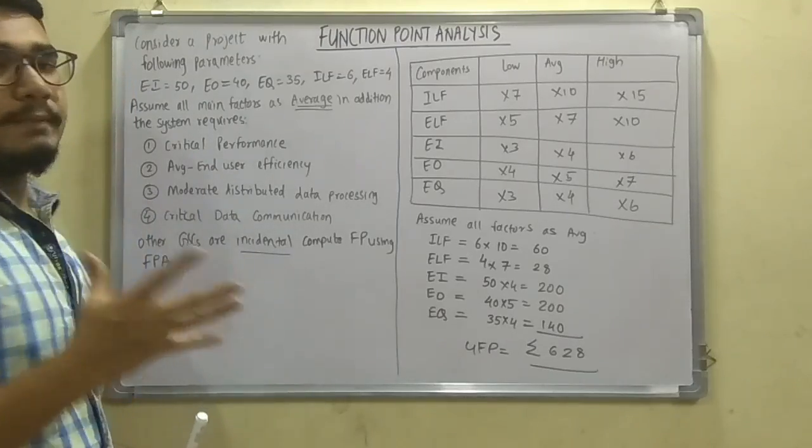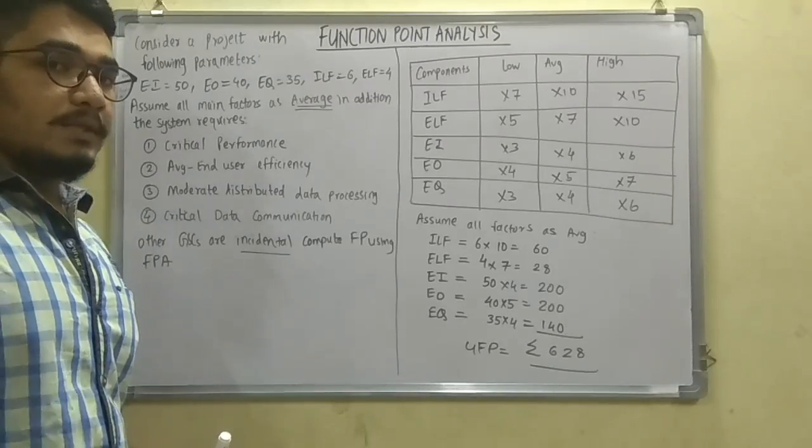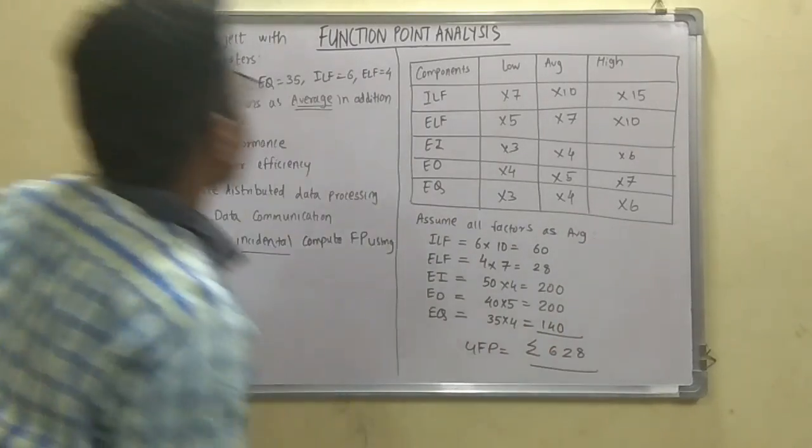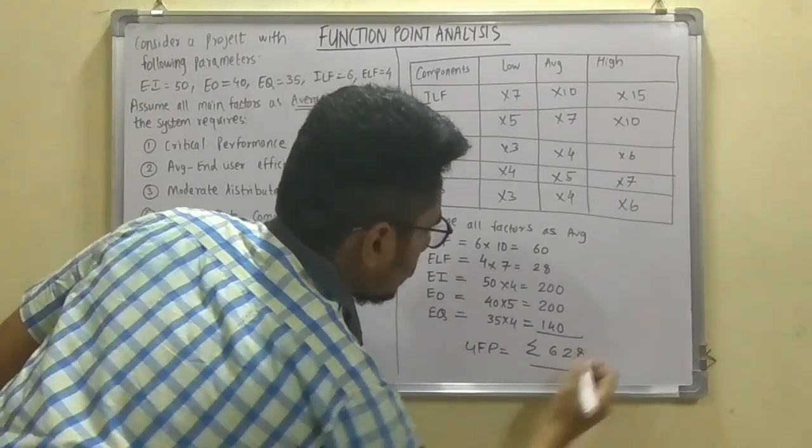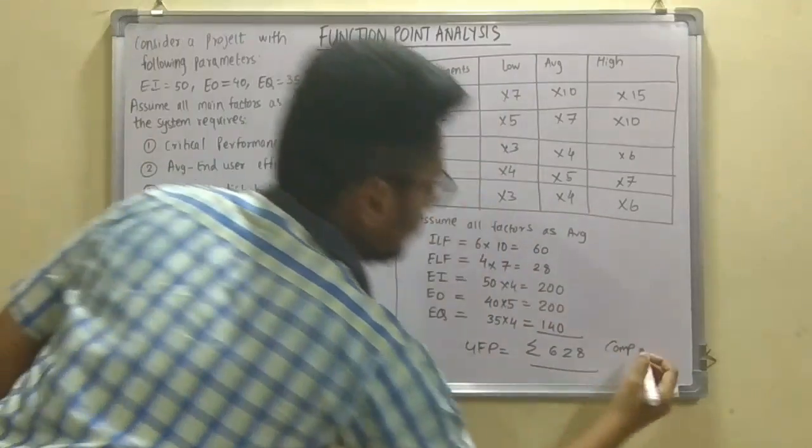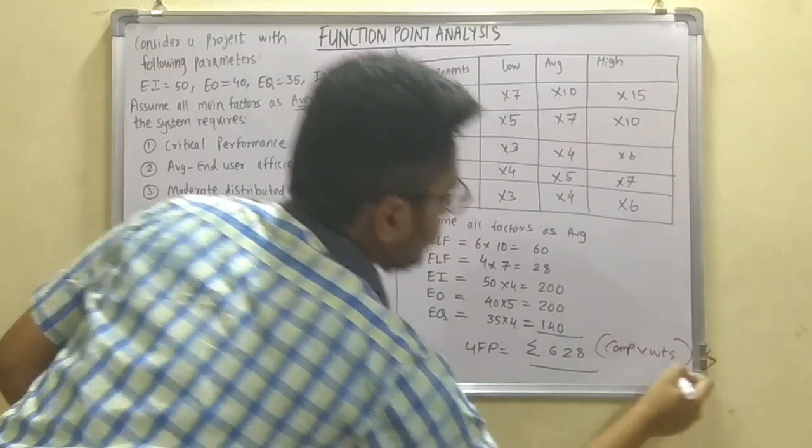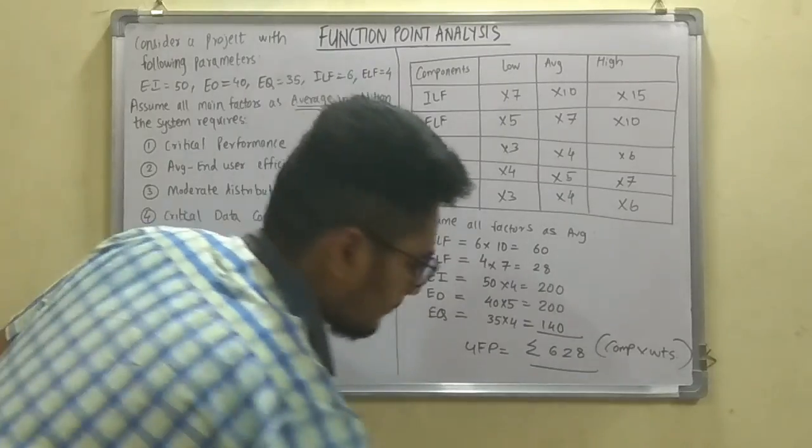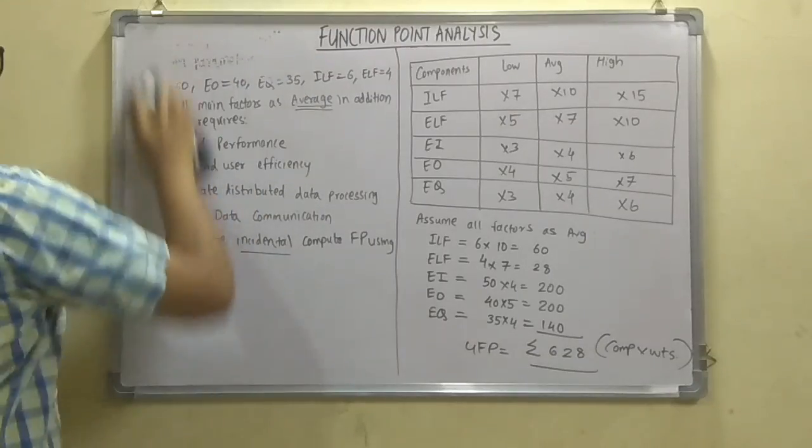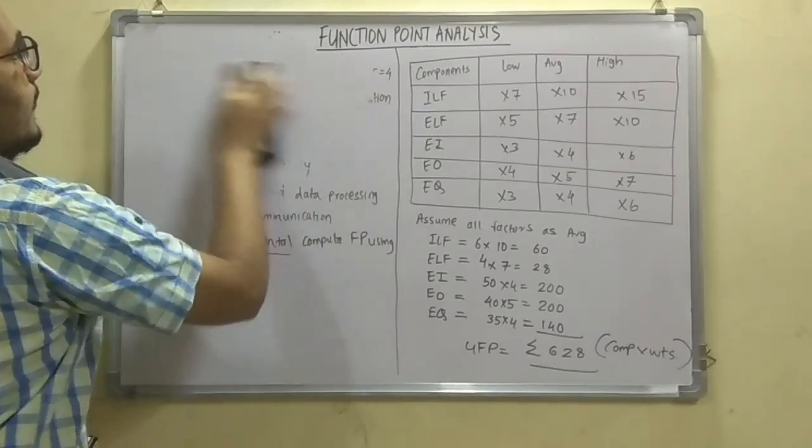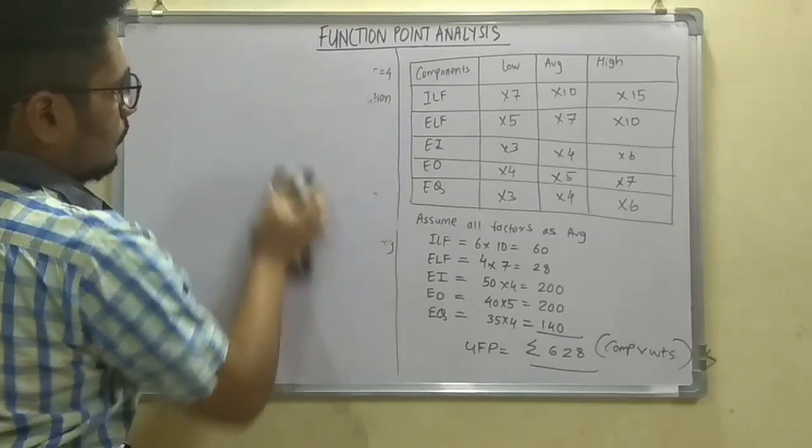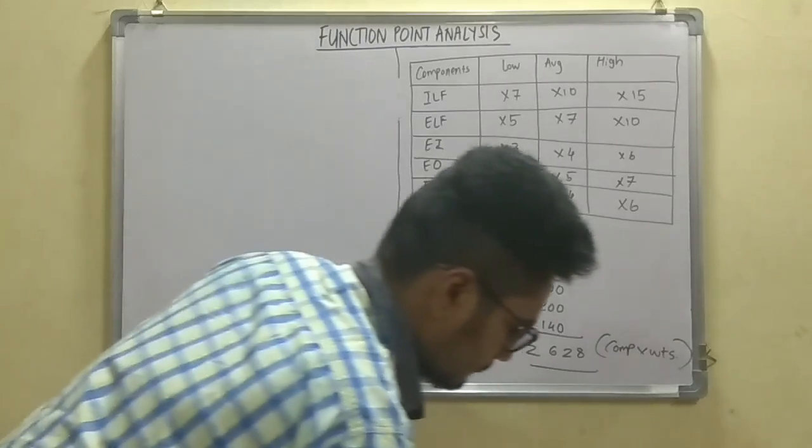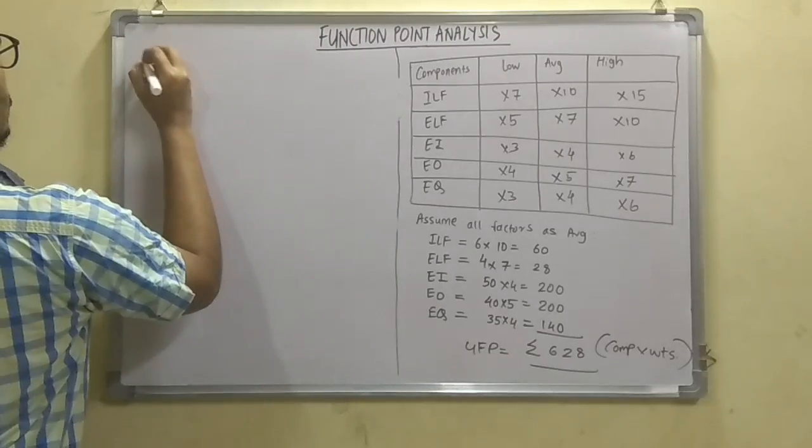Now next we have to calculate the TDI, that is the total degree of influence from the table, which we have seen in the previous video based on step 2. So basically this UFP is the components, like these components into their weights. So that's what we have done here. The very first step is calculation of the UFP. Next we move on to calculating the TDI, that is the total degree of influence.